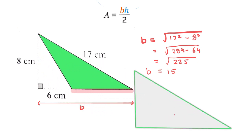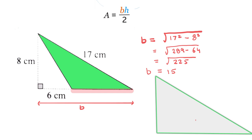If I remove that big triangle, we can now look at the base of the green triangle, which is going to be 15 take away 6, which means that our base is 9 centimeters. We can now use the formula above: area is equal to the base times the height over 2.